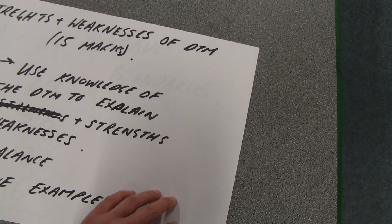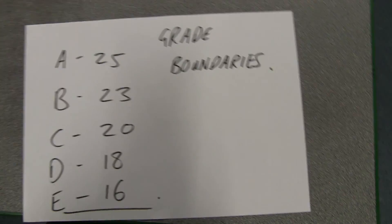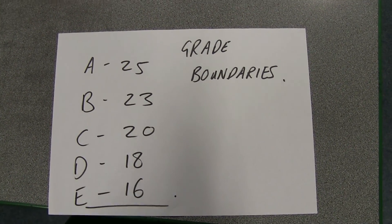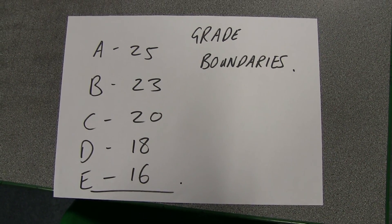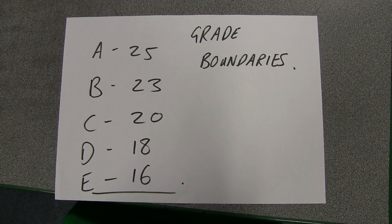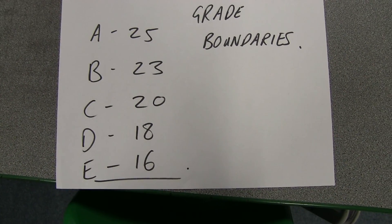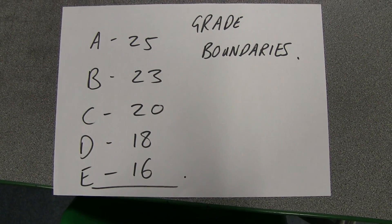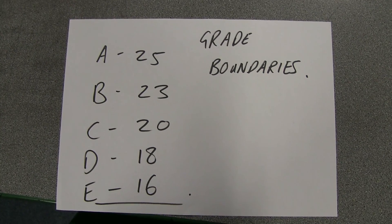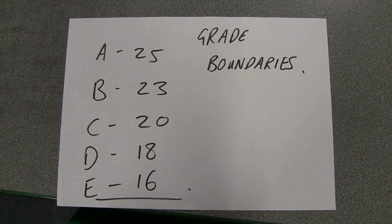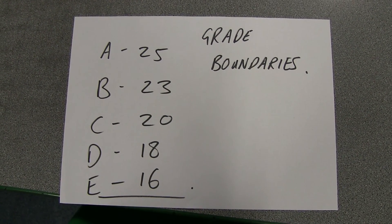Now we need to reveal the grade boundaries. Some of you might be a bit disappointed, but based on that test you needed 25 marks for an A, 23 for a B, 20 for a C, 18 for a D, and 16 for an E. Remember to watch this video back through again, fill in your self-assessment, and have another go at those questions. If you've got any questions in the meantime, give me a shout, send me an email, or come and find me at the university. Over and out.